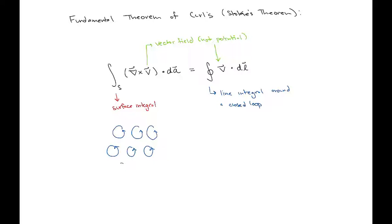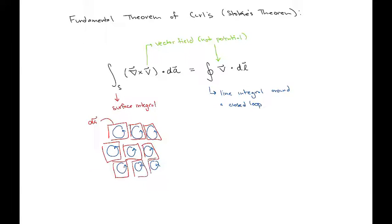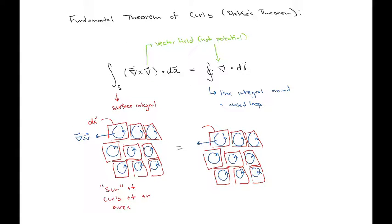The left-hand side is the sum of the curls over a bunch of areas. It's not really a sum because we're doing an integral — we're going to shrink those areas down to infinitesimally small amounts.